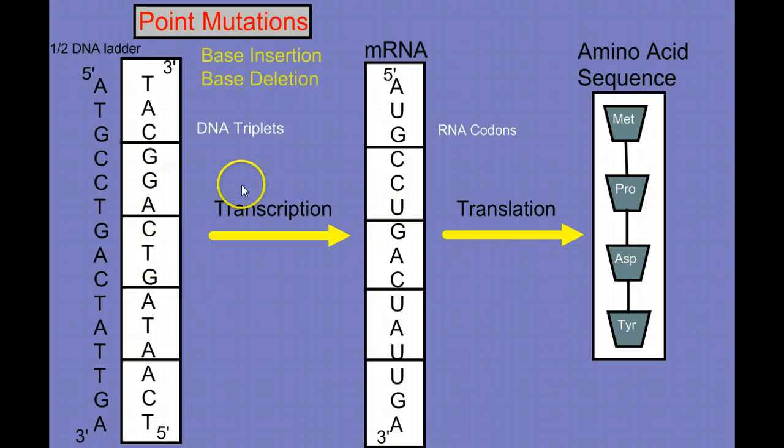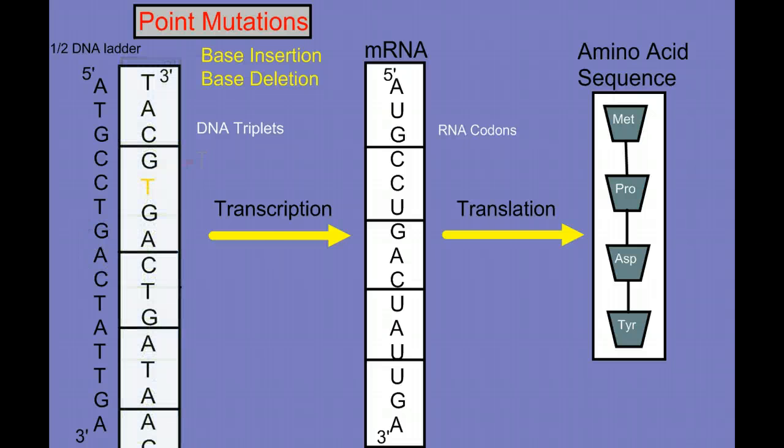Let's look at base insertions and base deletions. And we'll start with a base insertion. In fact, we'll just do a base insertion because it kind of has the same effect. So if I were to insert or add a T into this code, let's push that T on in there. Well, look how it changes things. When we read DNA code, we have to read in frames of three, but I have four letters here. So I need to shift my reading frames.